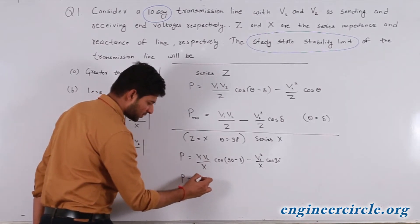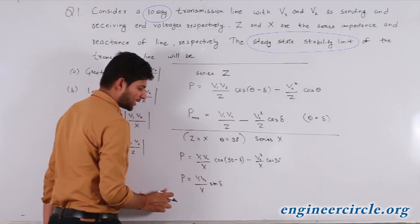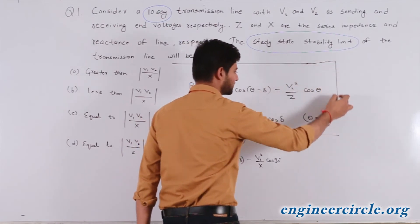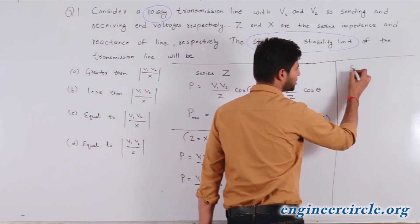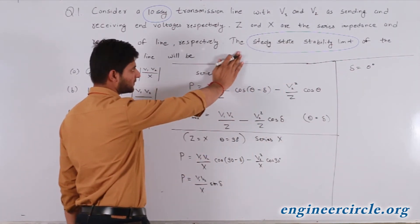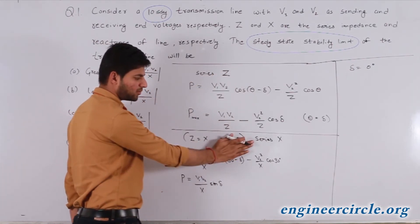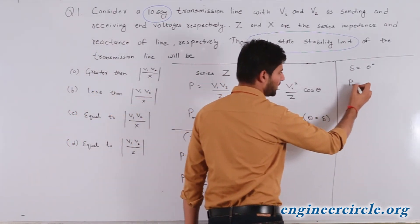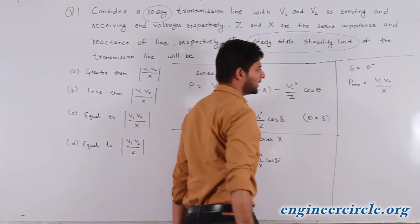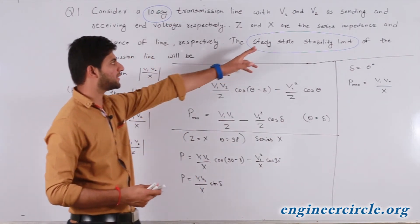The value of P will be equal to V1V2/X · sin δ. Maximum power flow will be possible when δ becomes equal to 90°. So the steady state stability limit considering only series reactance will be P_max = V1V2/X. This is the maximum value of the steady state stability limit in the case of only reactance.